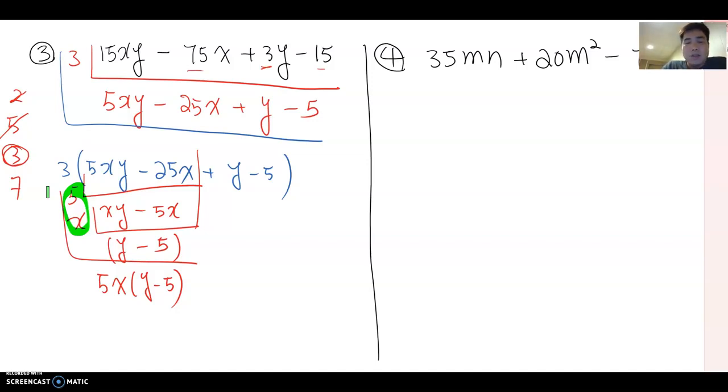Now five and y and five here, do you see any common factor between these two? No, which means the common factor becomes always one. Therefore I can rewrite this plus one times y minus 5 here.